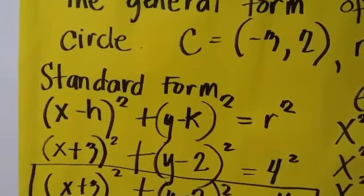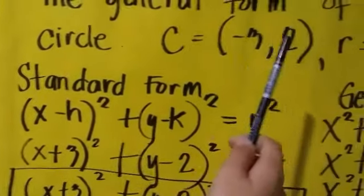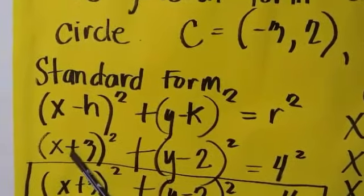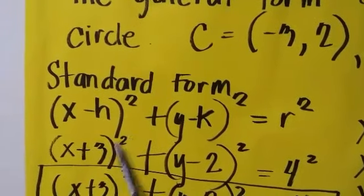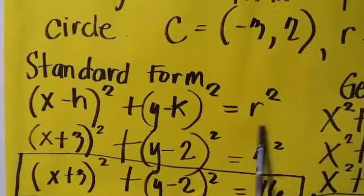So guys, we will just substitute our center and radius which will become x plus 3 squared plus y minus 2 squared equals 4 squared.